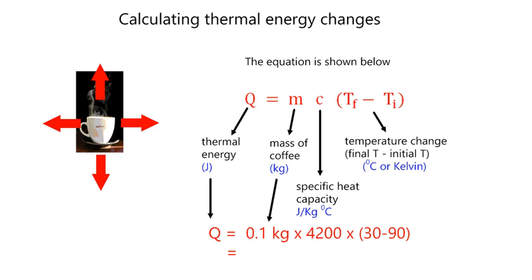So let's look at an example calculation. Let's try to find the amount of thermal energy transferred when the mass of the coffee was 0.1 kilograms. The specific heat capacity of coffee is the same as that of water, which is 4200 joules per kilogram Kelvin. You will be given this.